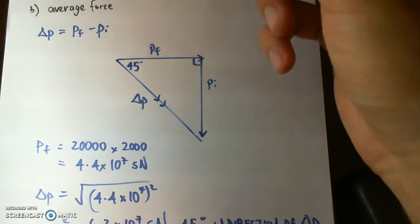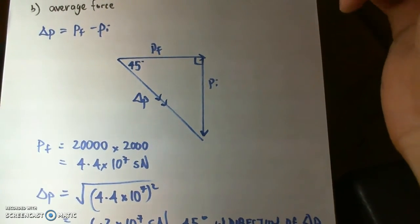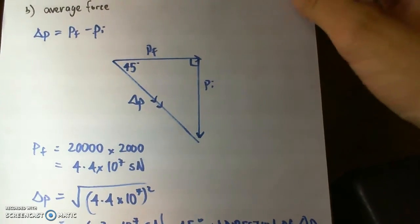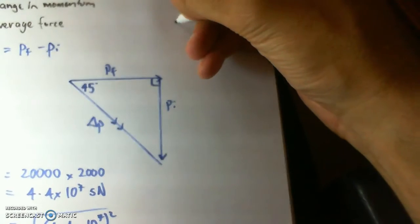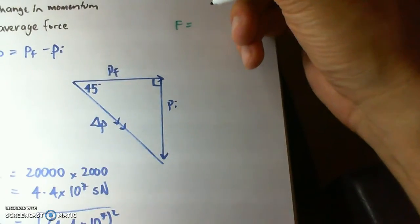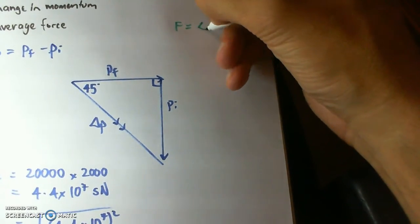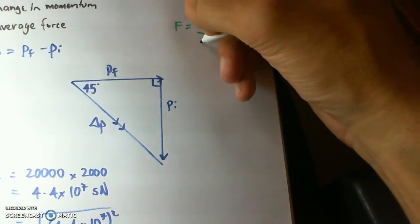Now our part B, we're looking for an average force. And normally I'd go to another page but I'm just going to write it here. So we know force when we're talking about momentum is equal to a change in momentum over a change in time.